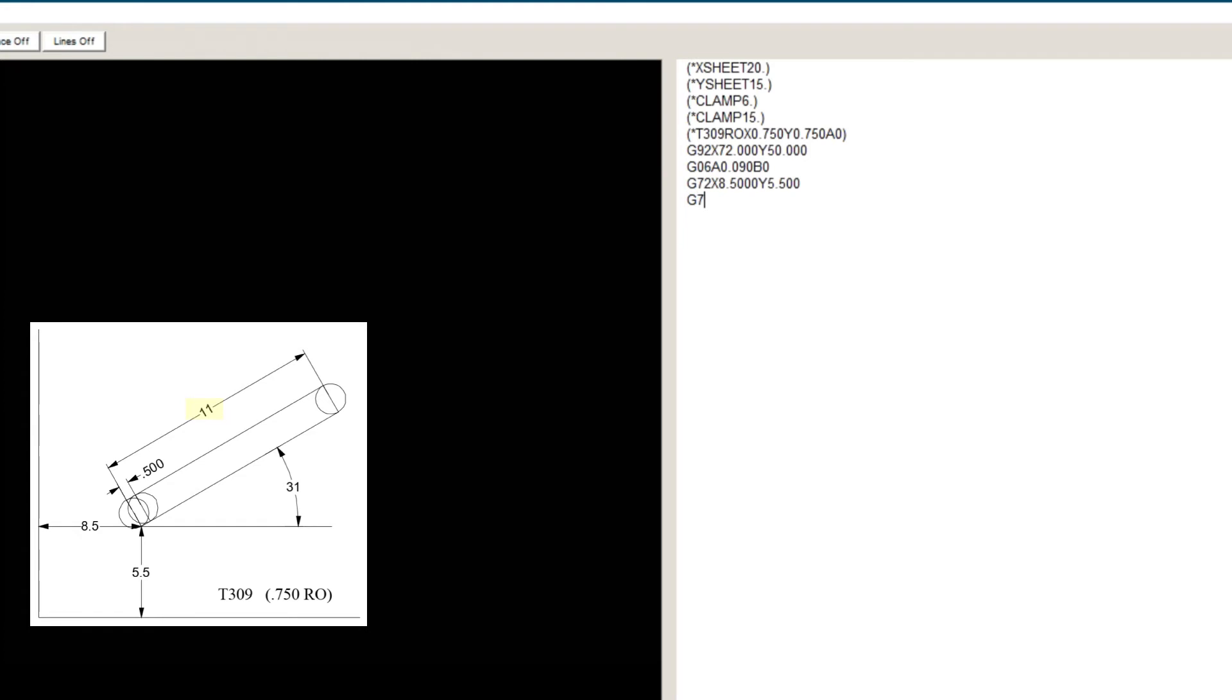I11, which is the length of the line. J31, which is the angle of the line. P0.75, which is the tool diameter. In this case, we want it to be offset to the left of the line, so it will be positive.